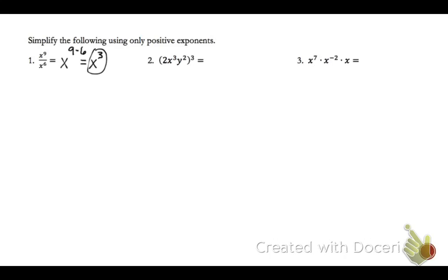On number 2, you're taking 2x cubed y squared to the 3rd power. So we're going to raise each of these to the 3rd power. Remember when you raise a power to a power, you multiply the exponents.